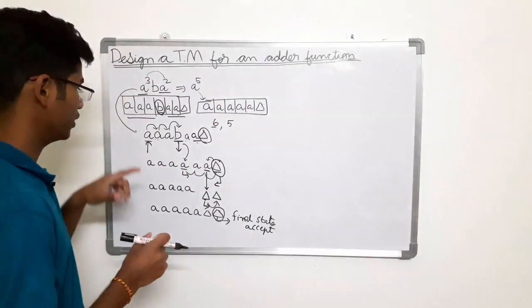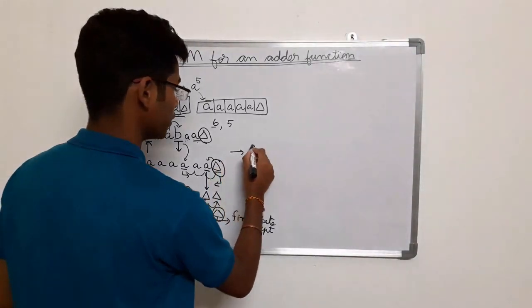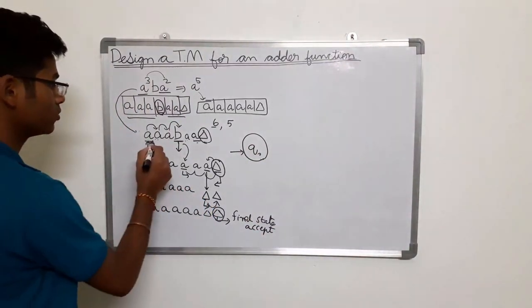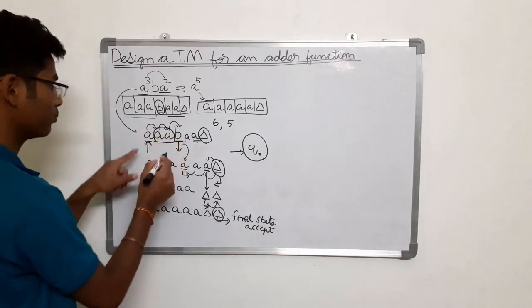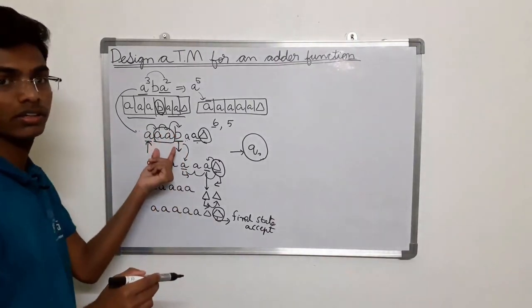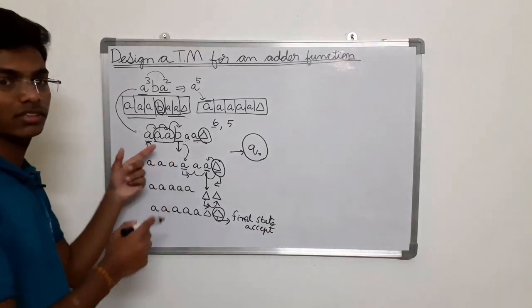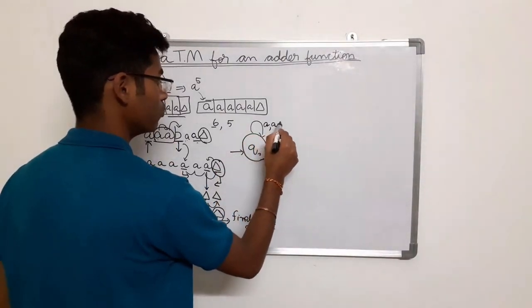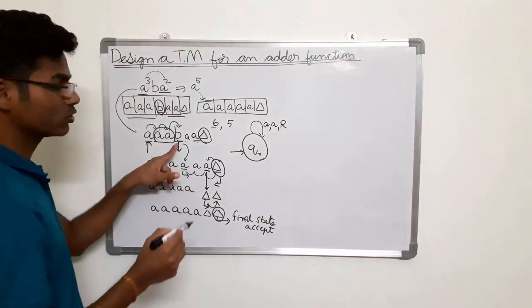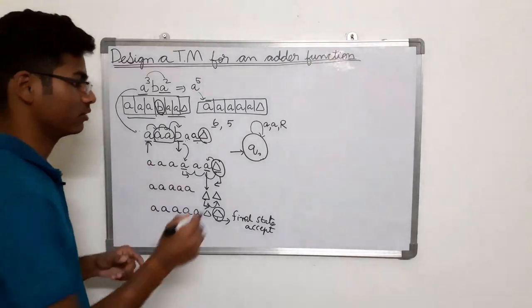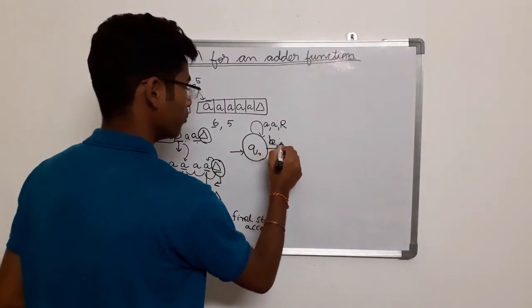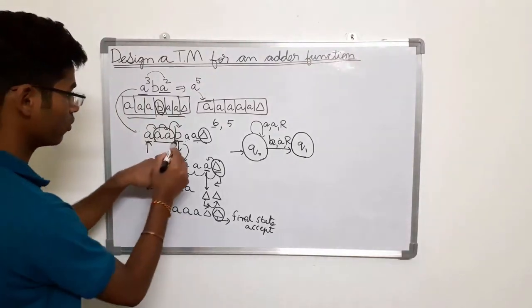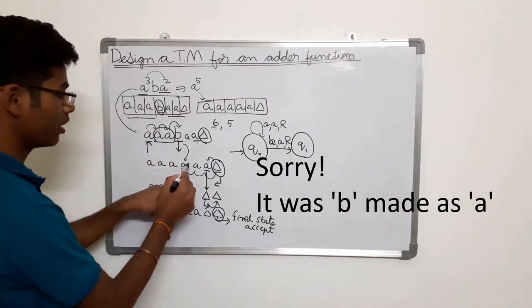Now let's draw the Turing machine. Initially we are at state q0. Move right till you find small b — there is nothing to do with the small a's so keep them as-is and move right. Once you have found small b, make it as small a and move towards right. You will reach a new state q1.